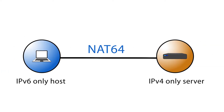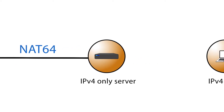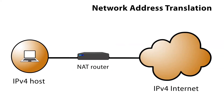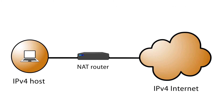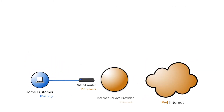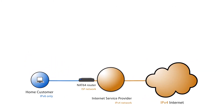NAT64 makes it possible for IPv6-only hosts to talk to IPv4-only servers. NAT64 is based on Network Address Translation, or NAT, used today for IPv4-only. NAT is a mechanism that translates a private IPv4 address to a public IPv4 address. In the case of NAT64, the customer doesn't have IPv4 connectivity — it only has a unique IPv6 prefix.